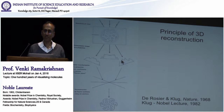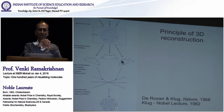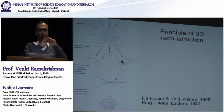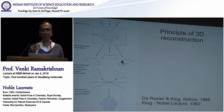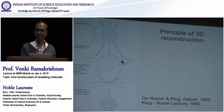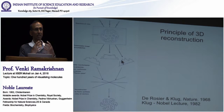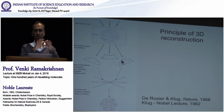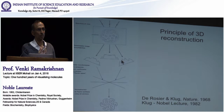Partly to avoid this, what Klug and others did was coat their sample with stain — something like uranyl acetate. You have uranium atoms that completely cover your molecule. These uranium atoms have very high contrast for electrons, so you don't have to use as many electrons. The disadvantage is the sample is dried out, and most biological molecules like to be in an aqueous environment. But the other disadvantage is that you're only getting a picture of the envelope of the molecule — not the internal structure.